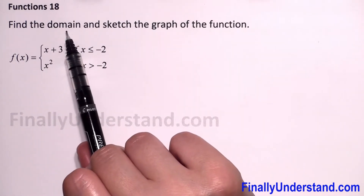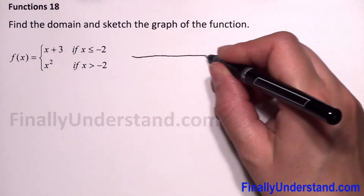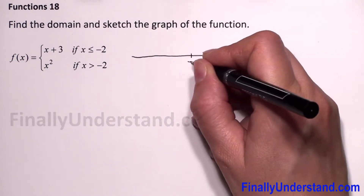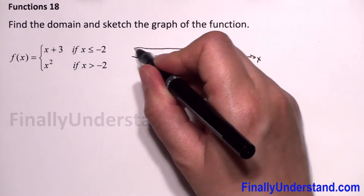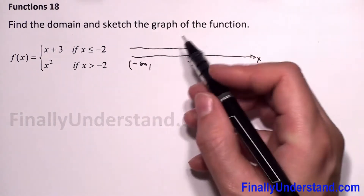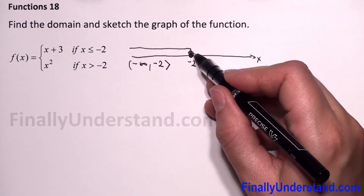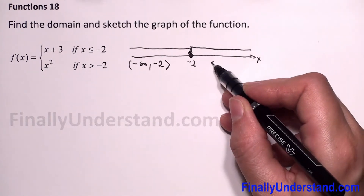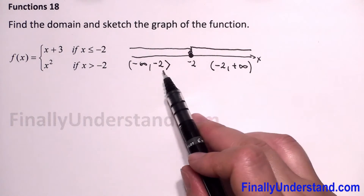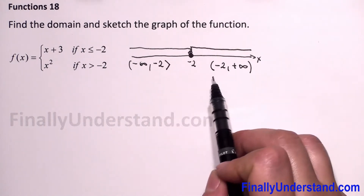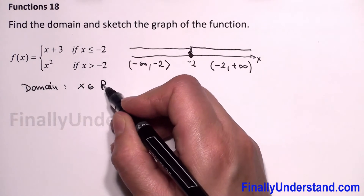First, we have to find the domain. We see that x belongs to all real numbers. Let me draw the x-axis. We have negative 2. For the first part, x less than or equal to negative 2 gives the interval from negative infinity to negative 2, closed at negative 2. For the second part, x greater than negative 2 goes to positive infinity. When we connect these two intervals, x belongs to all real numbers. Domain: x belongs to all real numbers.